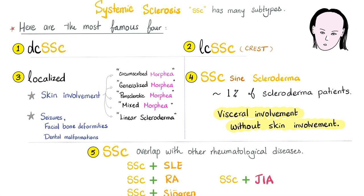These are the five types of systemic sclerosis. Localized scleroderma — it's localized, not systemic. This disease is more common in children; check a pediatric dermatology textbook for full details. It has five subtypes of skin involvement: circumscribed morphea, generalized morphea, pansclerotic morphea, mixed morphea, and linear scleroderma. It's not only skin — it can have other problems, usually in the face, such as seizures, facial bone deformities, and dental malformations.